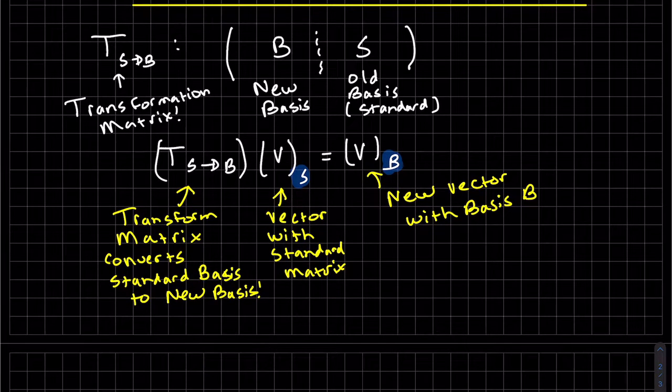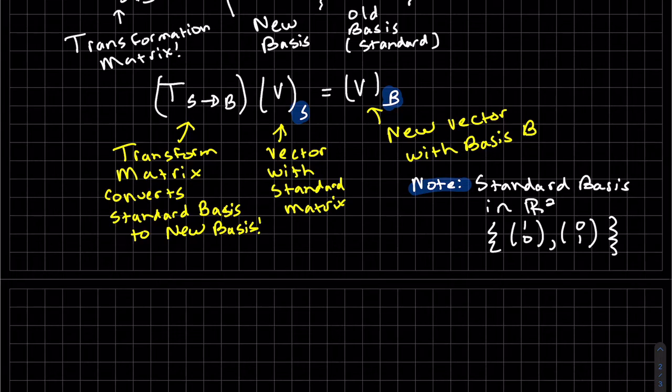So our note here, and we saw it from above, this is what a standard base C's looks like in R2. And of course, it'll be I, J, and K for R3. My second note is this formula works for converting two different bases C's, not standard.